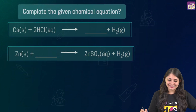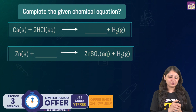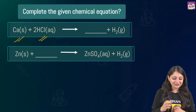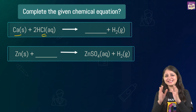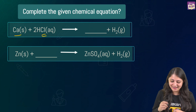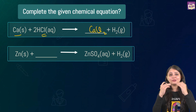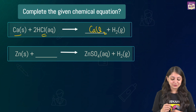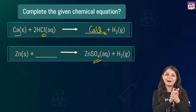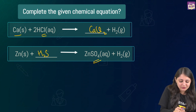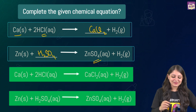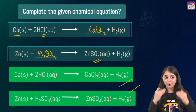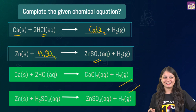Based on this, you can complete these reactions. Calcium metal reacting with hydrochloric acid gives calcium chloride plus hydrogen gas — combine calcium with Cl to get calcium chloride. For zinc reacting with an unknown acid to give zinc sulfate plus hydrogen, the sulfate tells us the acid is sulfuric acid. In both equations, a metal (Ca or Zn) reacts with an acid (HCl or H₂SO₄) to give the corresponding salt plus hydrogen gas.